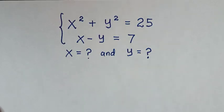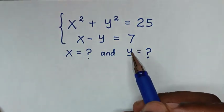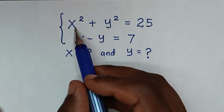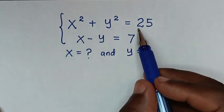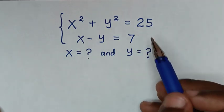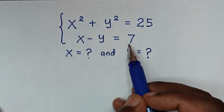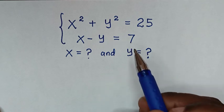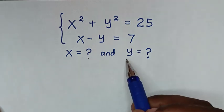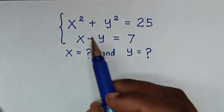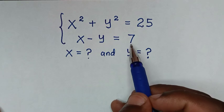Hello, you're welcome to solve this math problem, which is x squared plus y squared equals 25, and x minus y equals 7. We need to find the values of x and y from these two systems of equations.